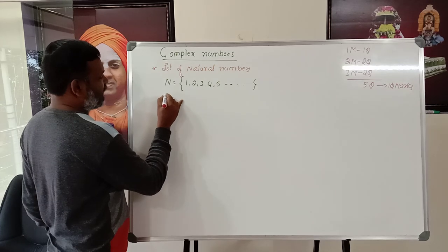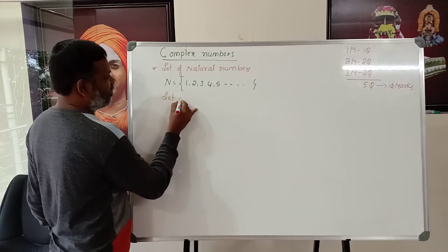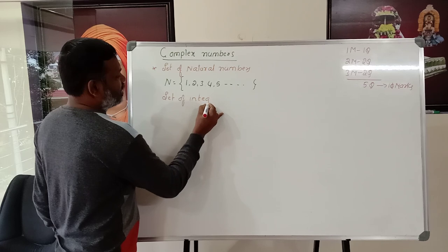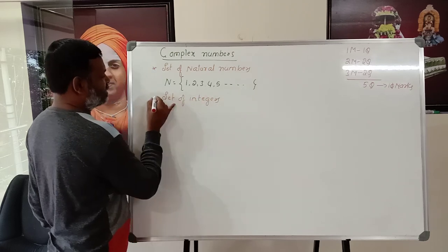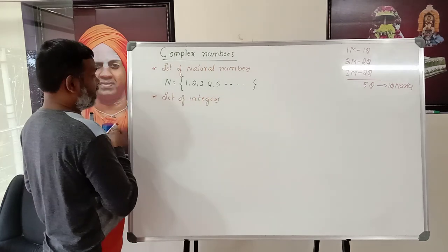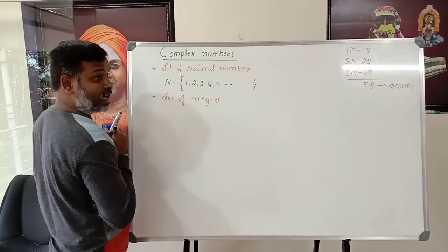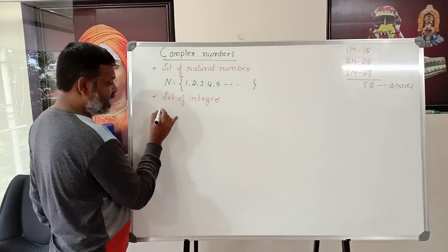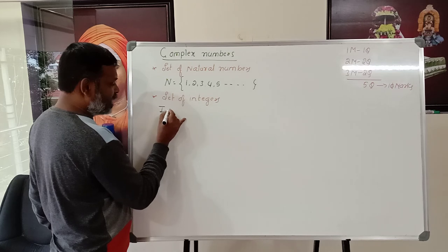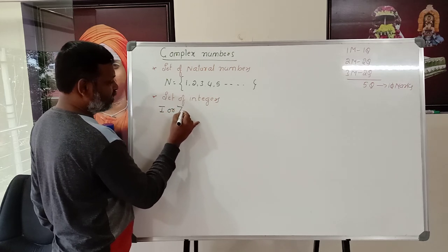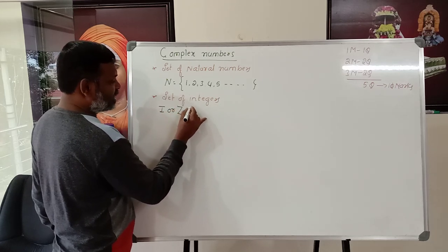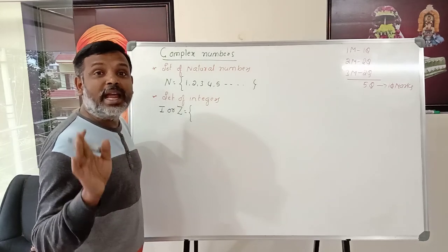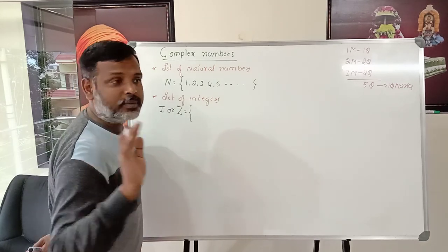The second number system is the set of integers, denoted by capital I or capital Z. This set contains both positive whole numbers and negative whole numbers, including zero.